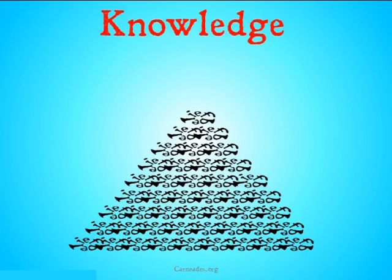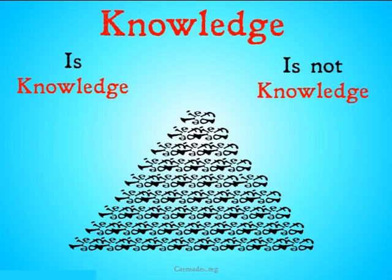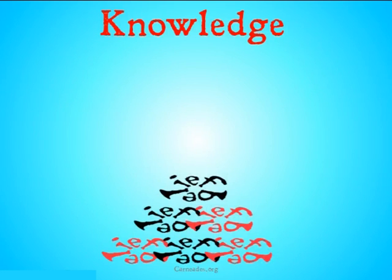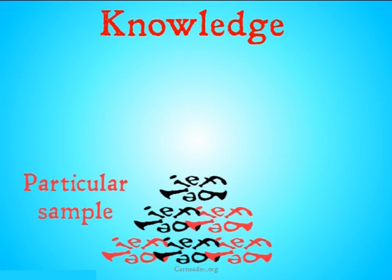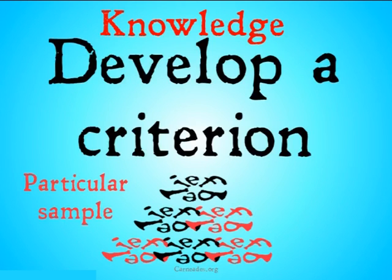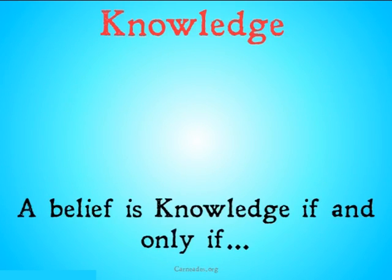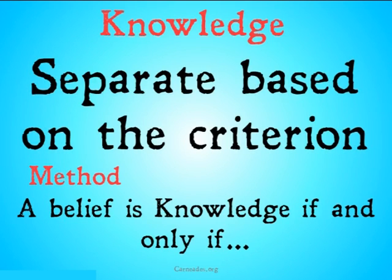The same applies for knowledge. Imagine we have, instead of sand, a pile of beliefs, and we're told we must divide these beliefs into beliefs that are knowledge and beliefs that are not knowledge. If we were given a set of beliefs and told that these beliefs are not knowledge and these beliefs are — a particular sample — we could develop a criterion based on those beliefs. This would be a particularist solution. If, on the other hand, we were given a criterion — 'a belief is knowledge if and only if...' — then we would use that method to separate those beliefs. This would be the methodist solution.